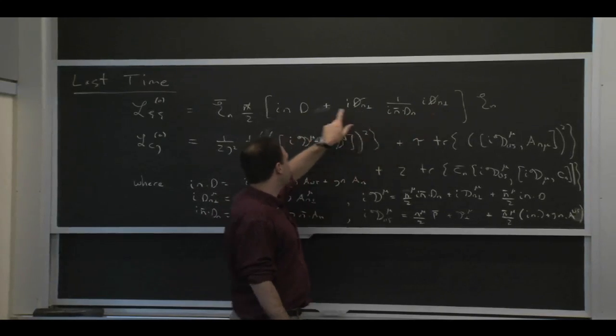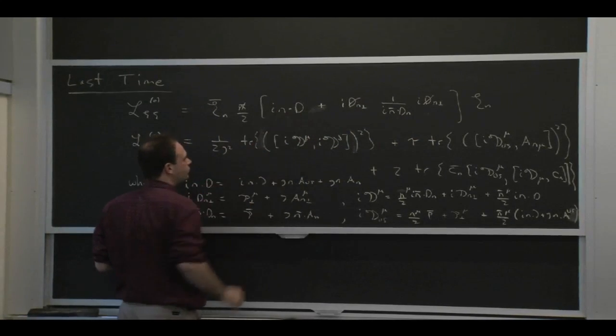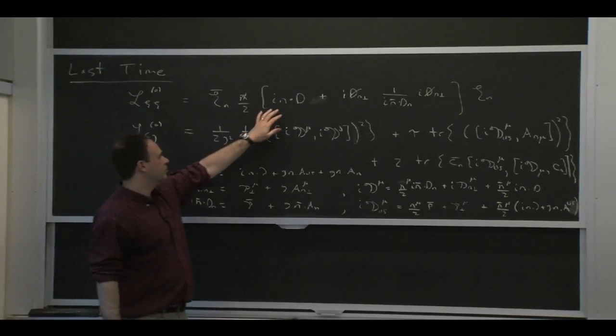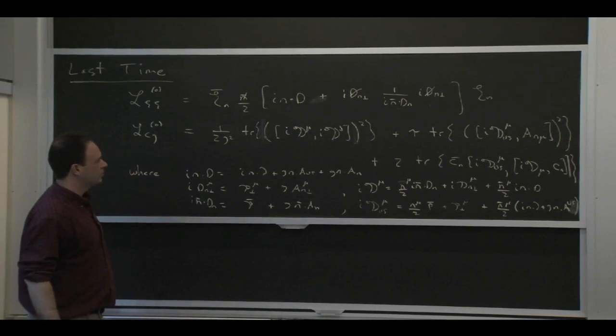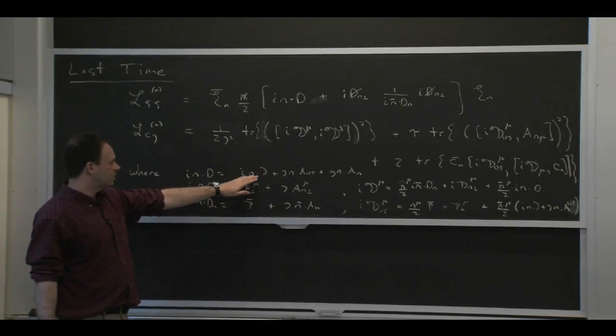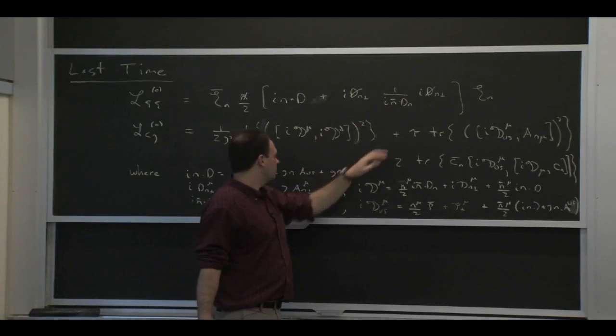It was only showing up in here, whereas both were showing up in here. There's only a single type of derivative here, because ultrasoft and collinear momenta are the same size in the n component, but they're different in these other components.